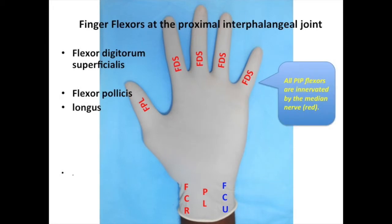Now let's discuss the finger flexors at the proximal interphalangeal joint. All proximal interphalangeal joint flexors are innervated by the median nerve. Remember that the thumb has only a single interphalangeal joint; the flexor at this joint is the Flexor Pollicis Longus, or the long flexor of the thumb. The finger flexors at the proximal interphalangeal joints is the Flexor Digitorum Superficialis, or the superficial flexor of the fingers. The Latin adjective superficialis — or in English, superficial — indicates the position of these tendons as they pass through the carpal tunnel, superficial to the deep flexor of the fingers, the Flexor Digitorum Profundus. Pause the video to mark your glove as indicated.